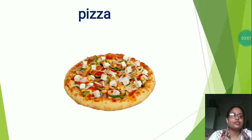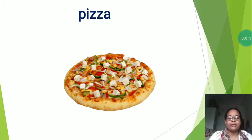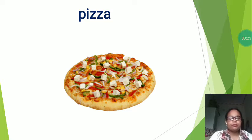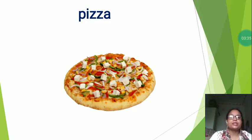It is a junk food. So dear students, pizza is an Italian food made of a flat crust covered with tomato sauce, cheese and often meat or vegetables, and then baked. Normally people like a large pizza with mushrooms and onions. It is a dish made typically of flattened bread dough spread with a mixture. This is a junk food. It is not good for our health. We should eat it only sometimes, very less.